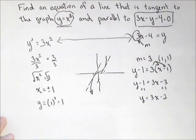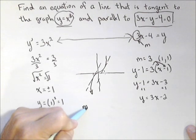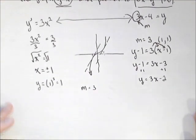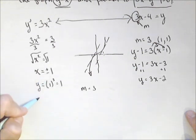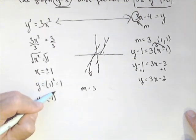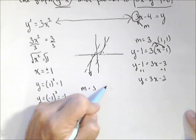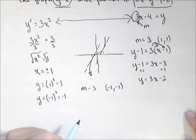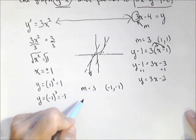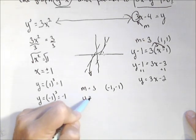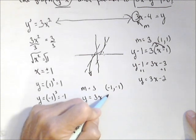We have one more tangent line coming. It also has a slope of 3. Now, it's got an x value of negative 1. So we're going to put that into x cubed. So negative 1 cubed is negative 1. So negative 1, negative 1. We'll do this one starting off in slope-intercept form, just so you can see the difference. In this case, we would start to set it up. y equals 3x plus b.